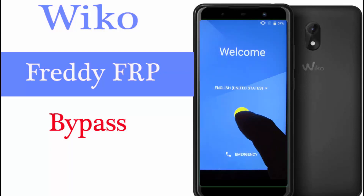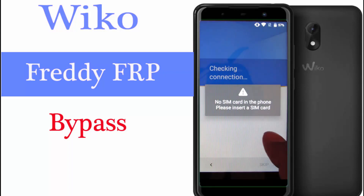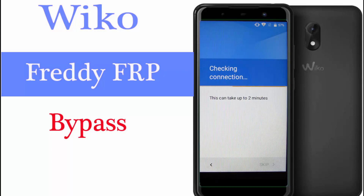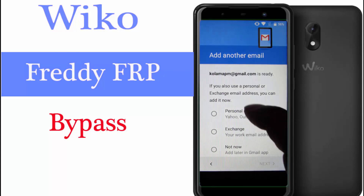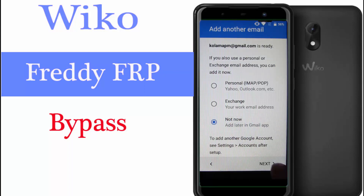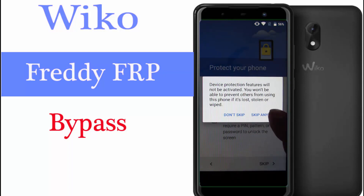Now press the arrow key again. Press skip, press skip — this may take up to 2 minutes, so wait. It may take a few minutes, don't panic, it's working in the background. It's showing my previous account. I press 'Not now', then choose next. I unplug drive protection — choose skip anyway.